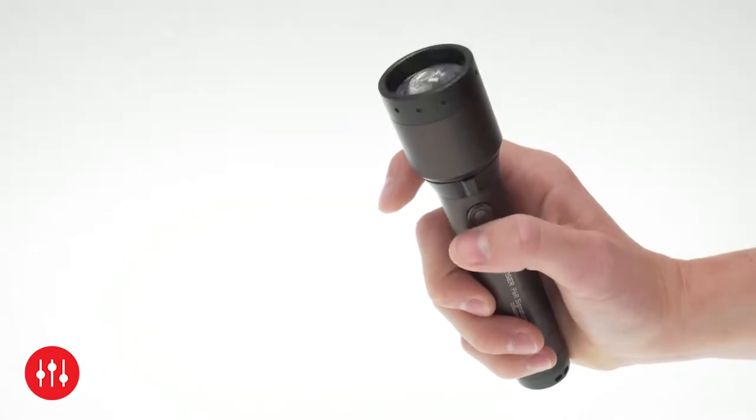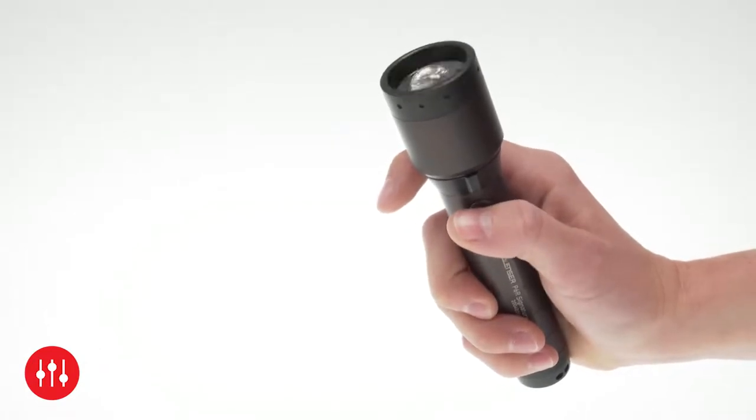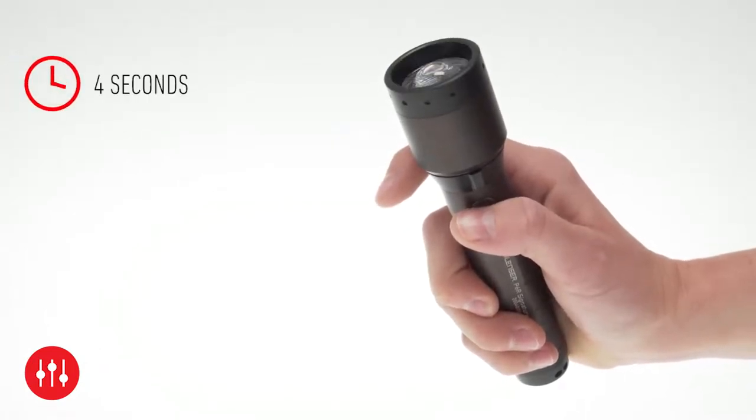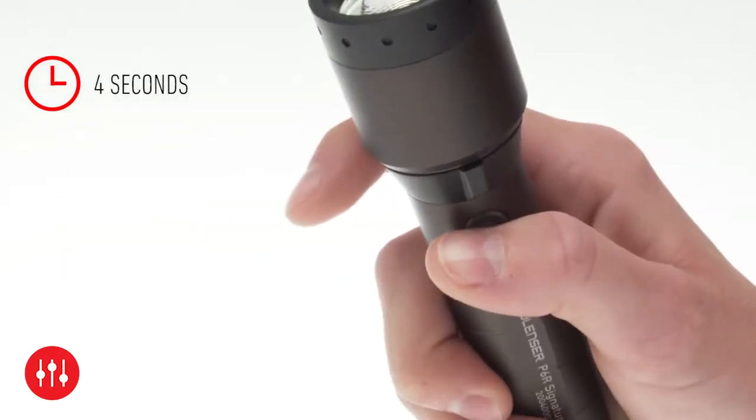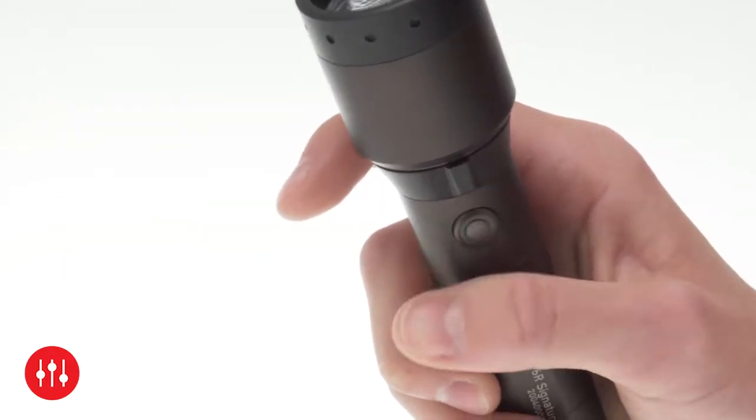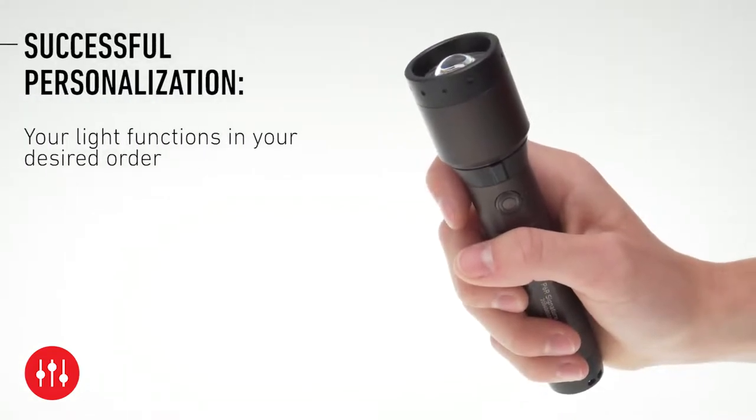When you are finished and do not want to add more light functions, hold the switch for 4 seconds. It will flash 3 times to confirm. The switch personalization is now complete.